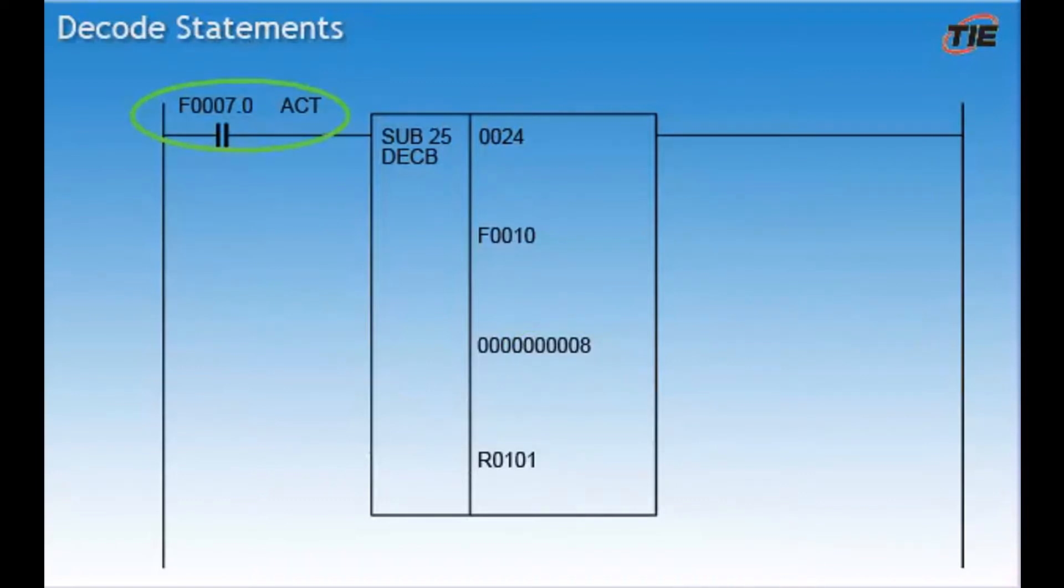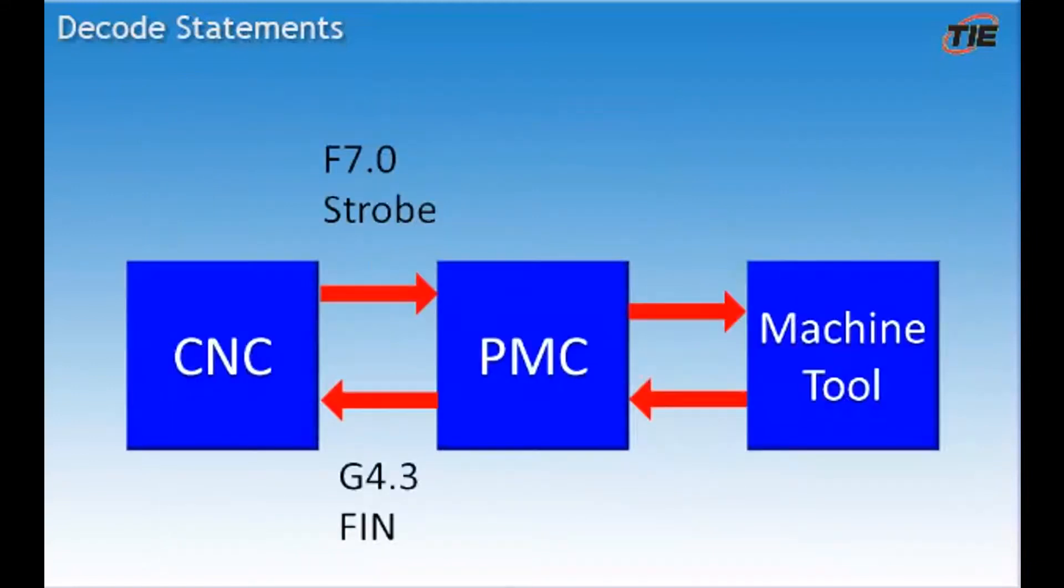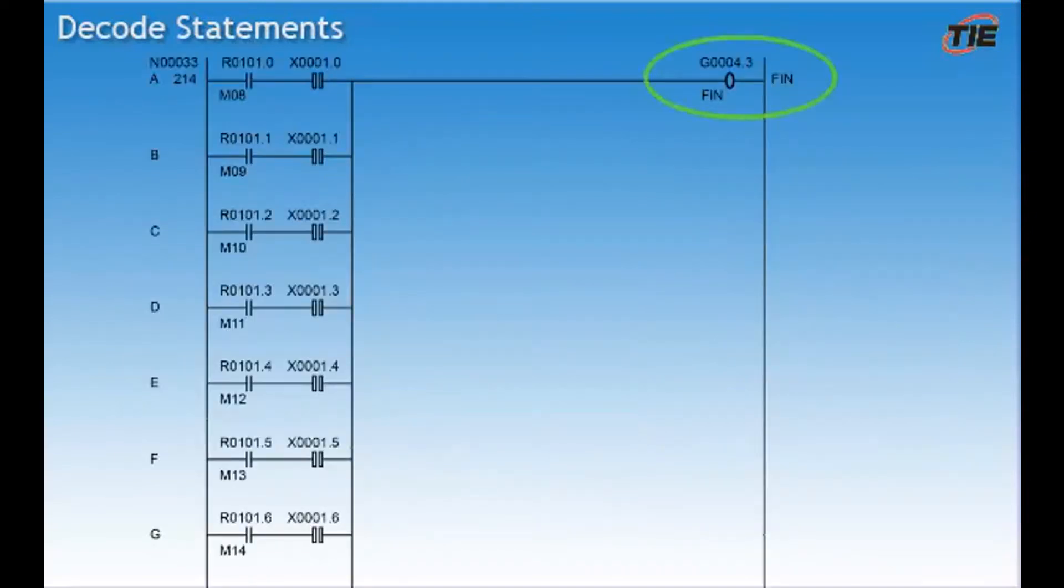Once the output is turned on, it stays on. This is due to the strobe signal, F7.0, still being active. The strobe signal will remain active until the FIN signal is received by the CNC or the control is reset. The FIN signal, G4.3 or G5.0, is activated in the ladder logic by the machine tool builder. This happens once the M code operation has completed. For instance, the door is finished closing, the ATC operation has completed, or the indexer has completed its move.